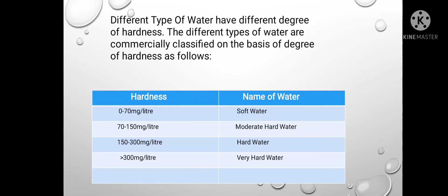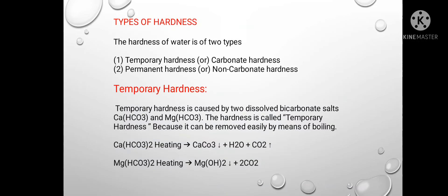Now we will see that different types of water have different degrees of hardness. Water is commercially classified on the basis of degree of hardness. There are two types of hardness: first, temporary hardness, also known as carbonate hardness; and second, permanent hardness, also known as non-carbonate hardness.